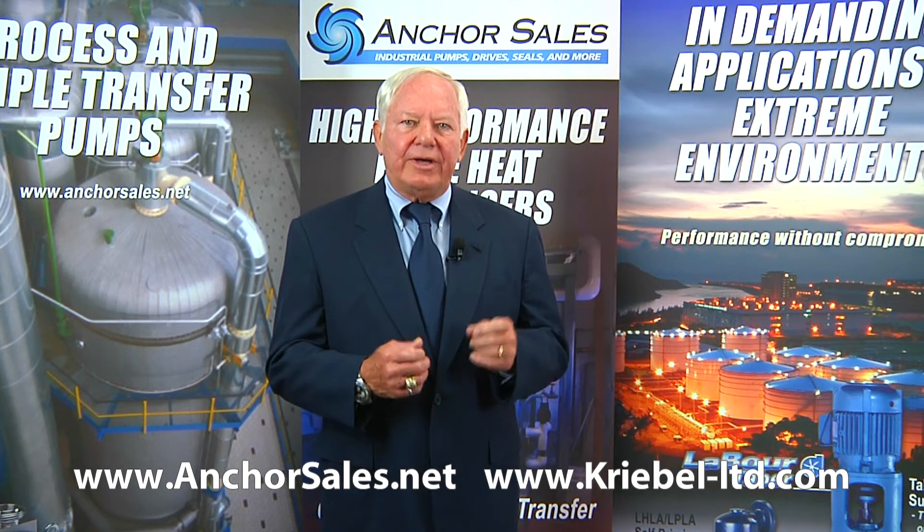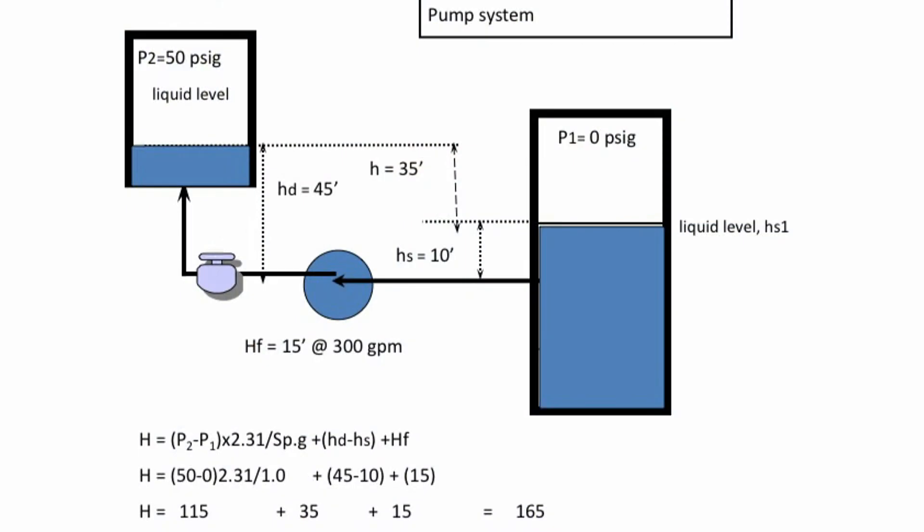Let's assume you have a pump system which is transferring fluid from an atmospheric tank to a continuous pressurized reactor which is at a higher elevation. You calculate the head loss at 300 GPM as 165 feet.